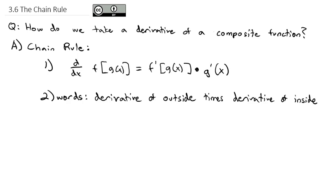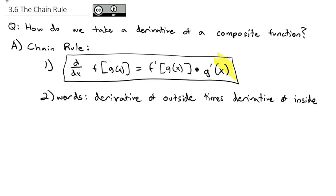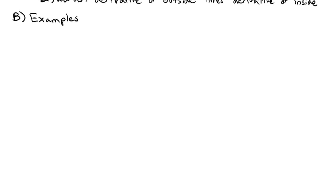We're going to look at seven examples where we do this process over and over: take the derivative of the outside times the derivative of the inside. The chain rule is one you should be very comfortable with in order to take derivatives. So let's take a look at some examples.